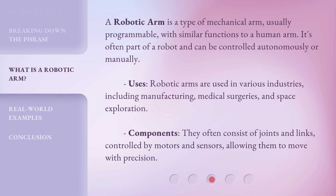A robotic arm is a type of mechanical arm, usually programmable, with similar functions to a human arm. It's often part of a robot and can be controlled autonomously or manually.